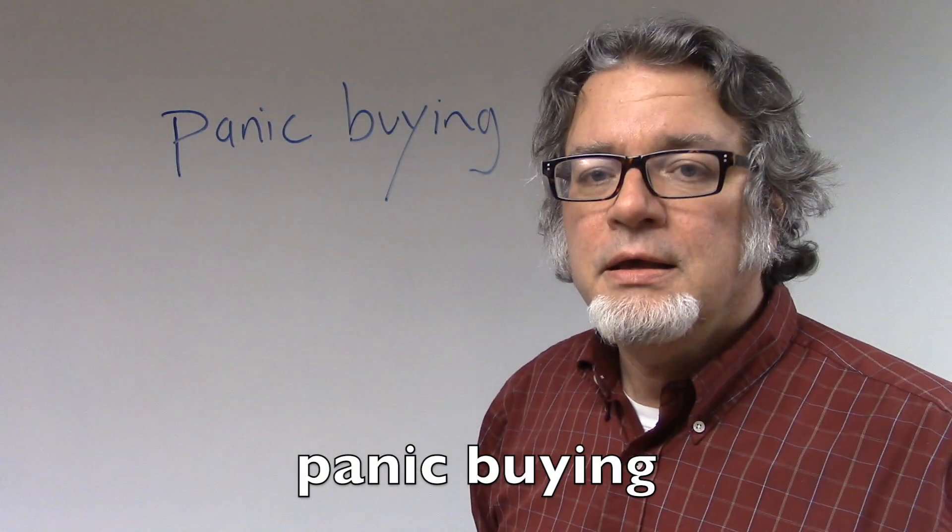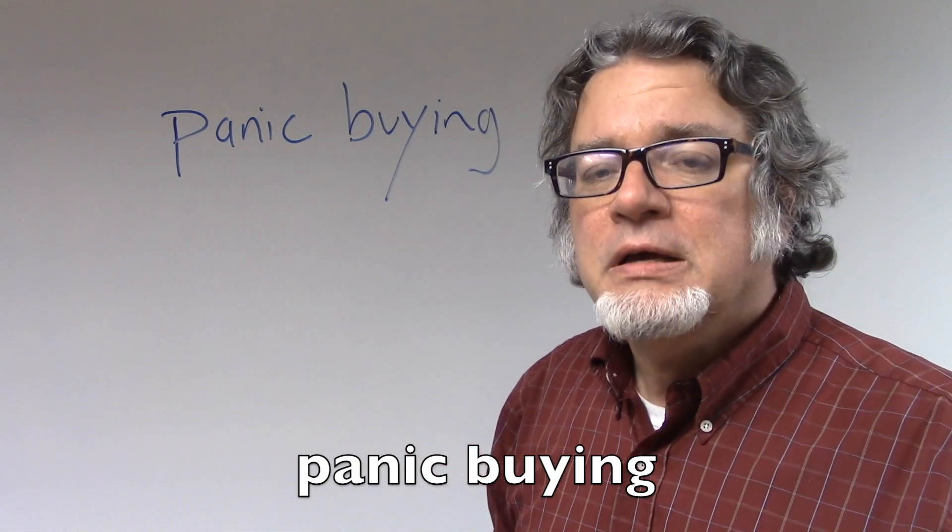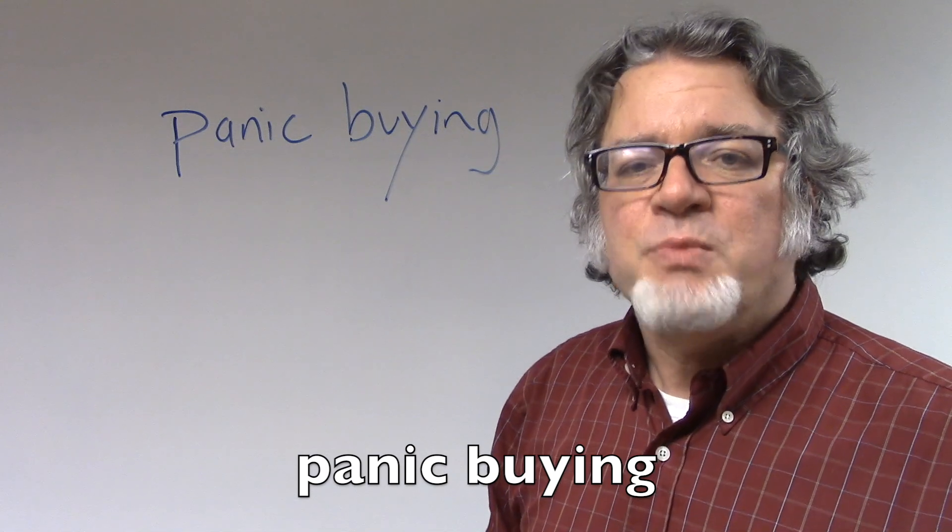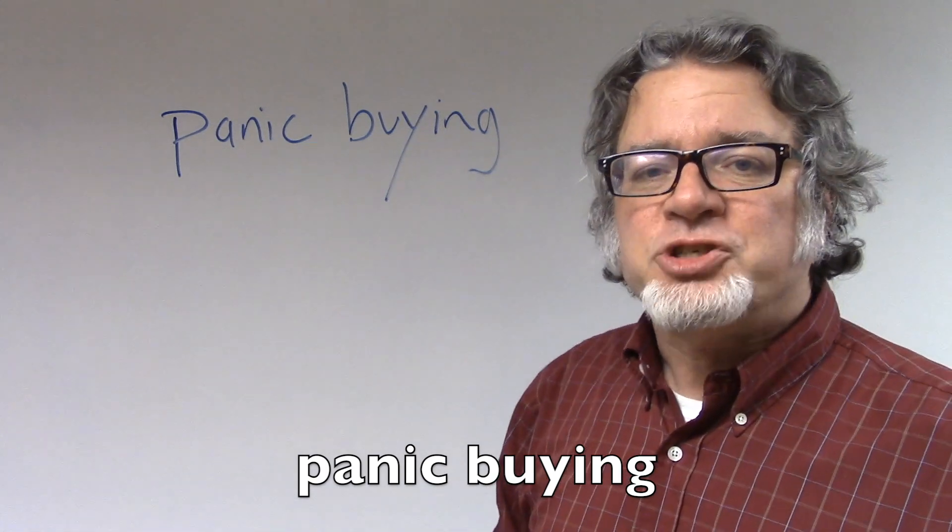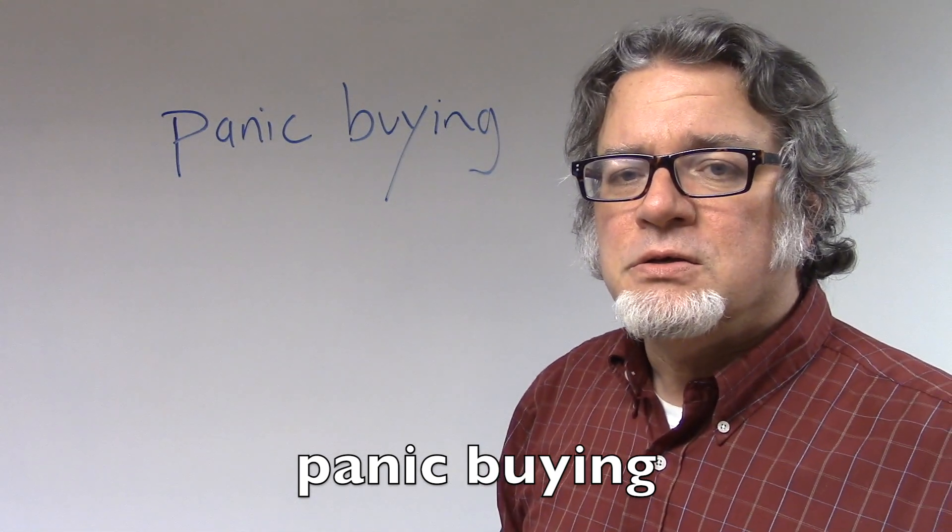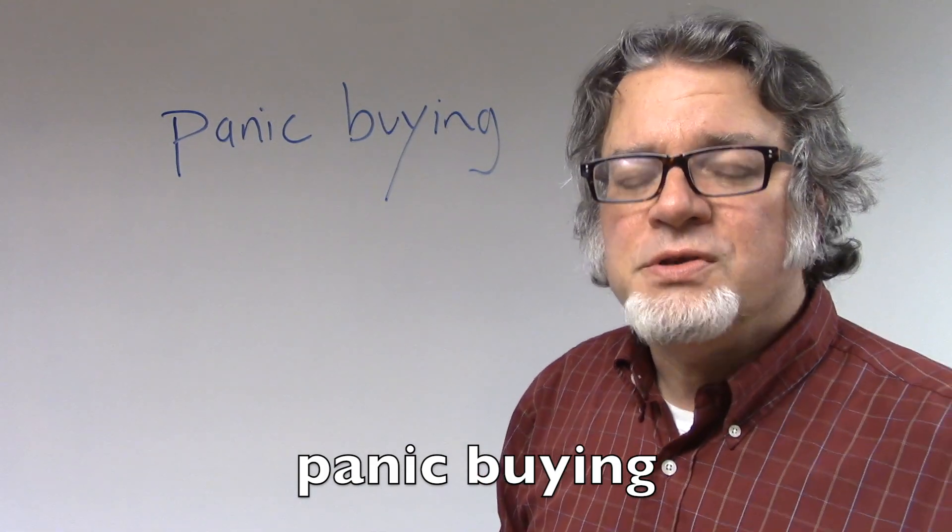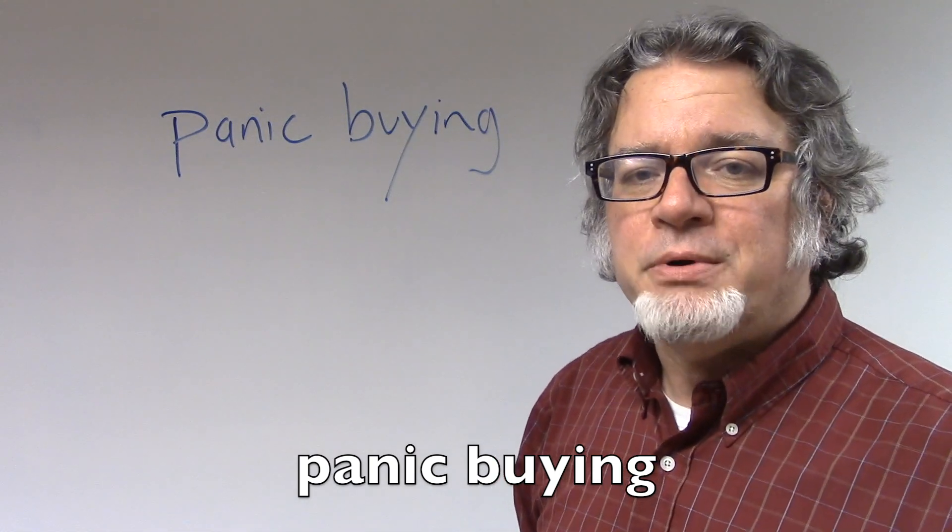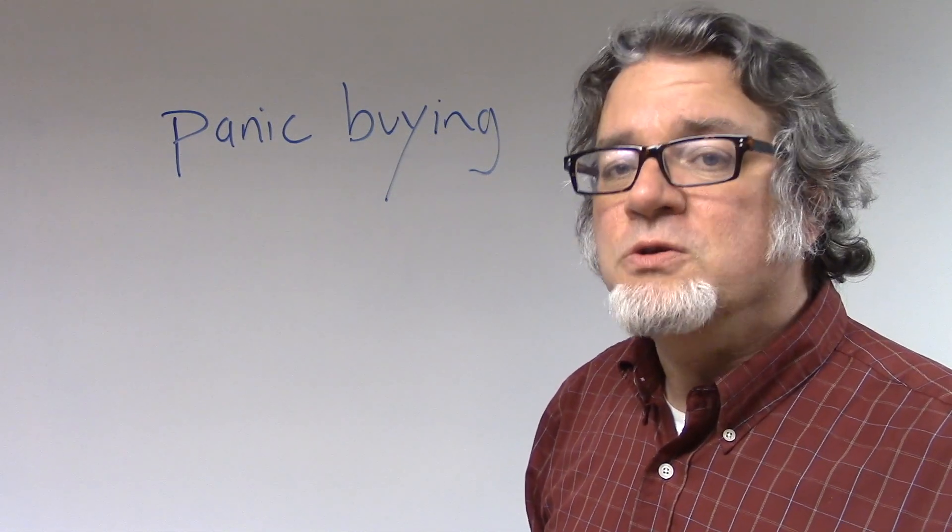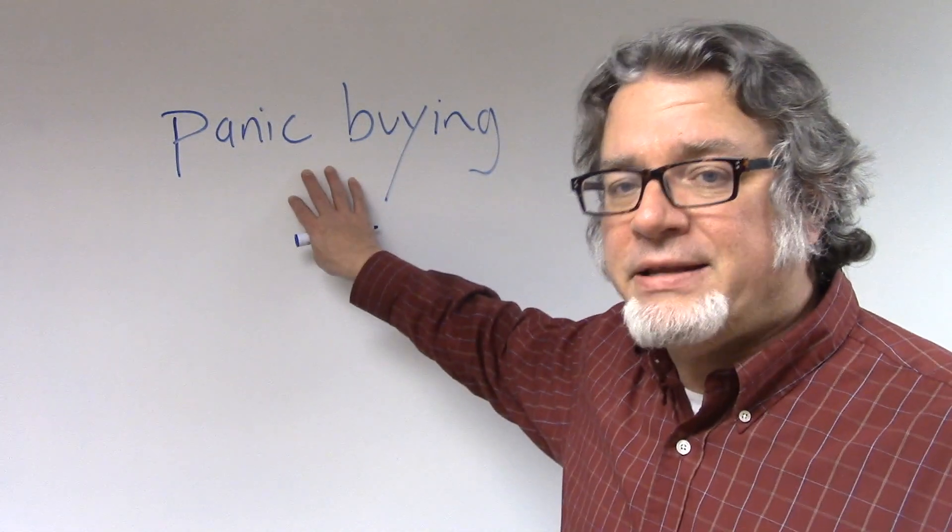Panic buying. When there's any sort of uncertainty about the future, sometimes people will go to the store, the grocery store, and buy as much food as they can because they're not sure when that food will be available in the future. So, now people are engaged in panic buying. This panic buying includes other things such as toilet paper, hand sanitizer, and soap. So if you go to the store and you can't find what you need, it's because there's been a lot of panic buying.